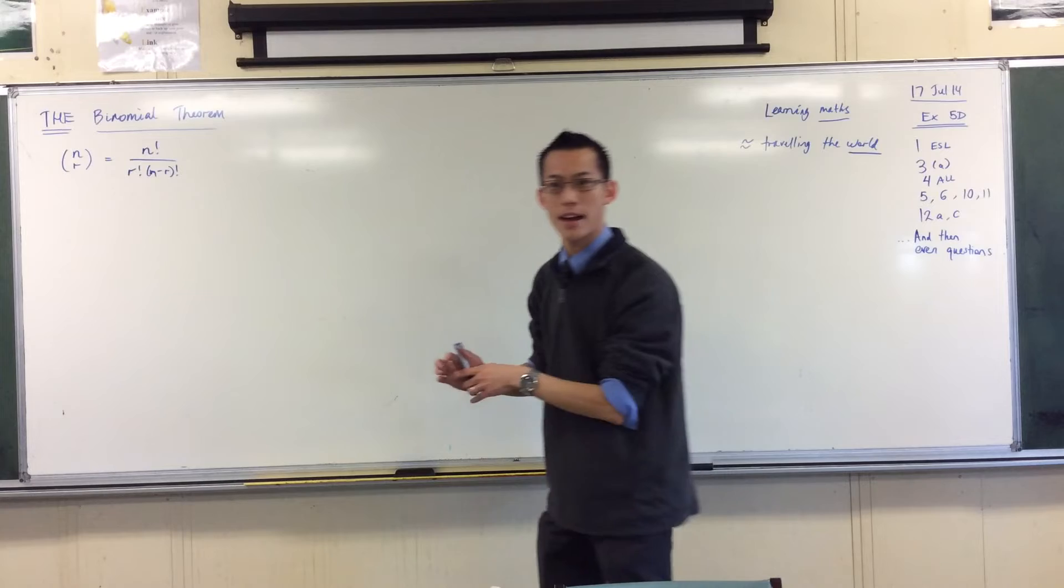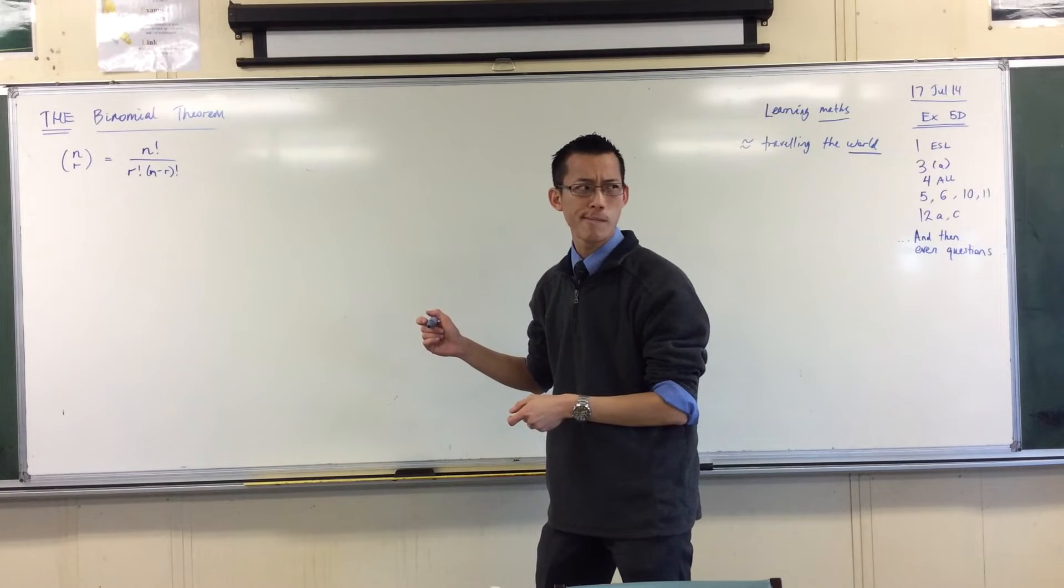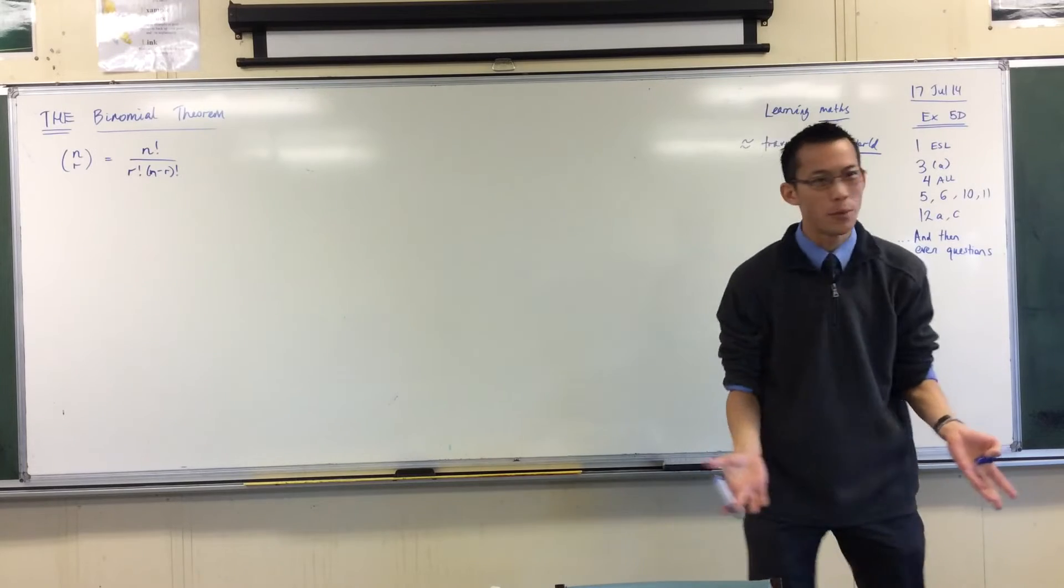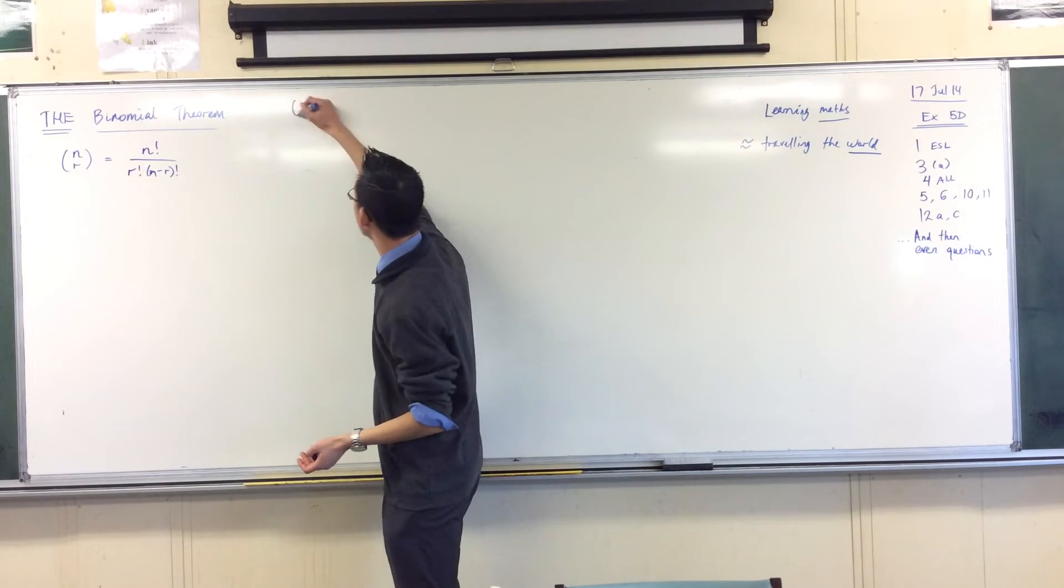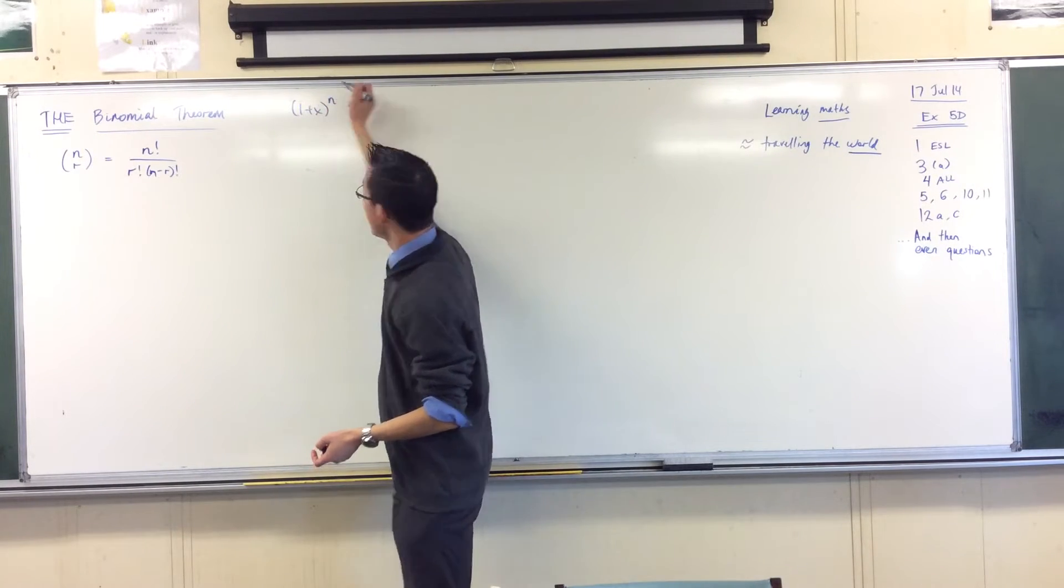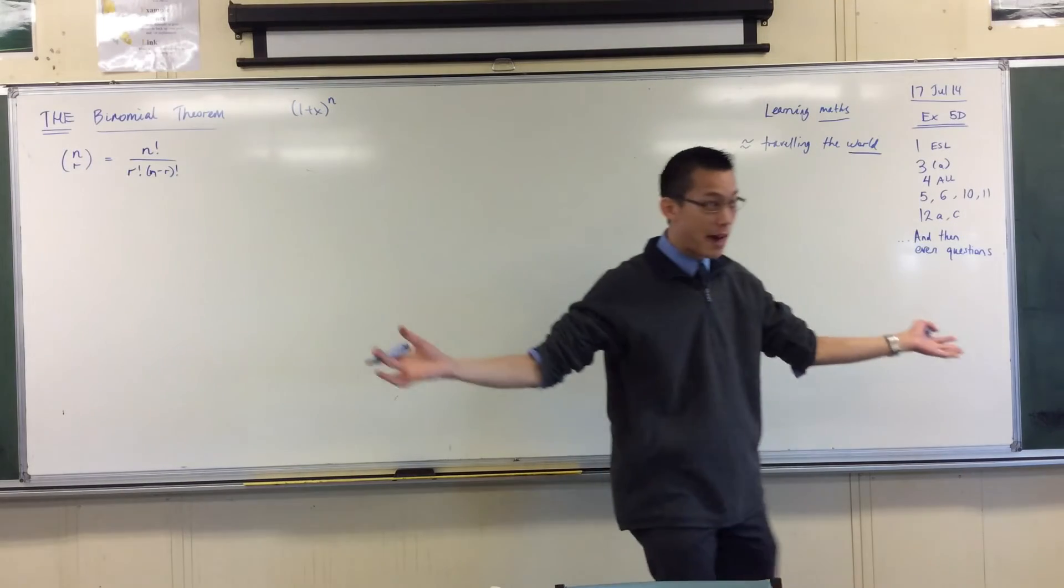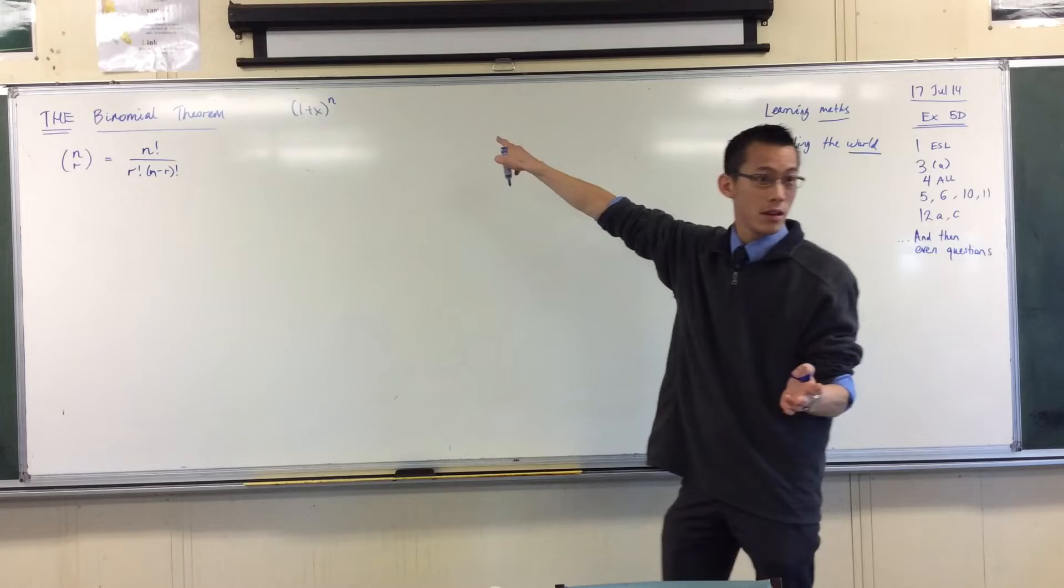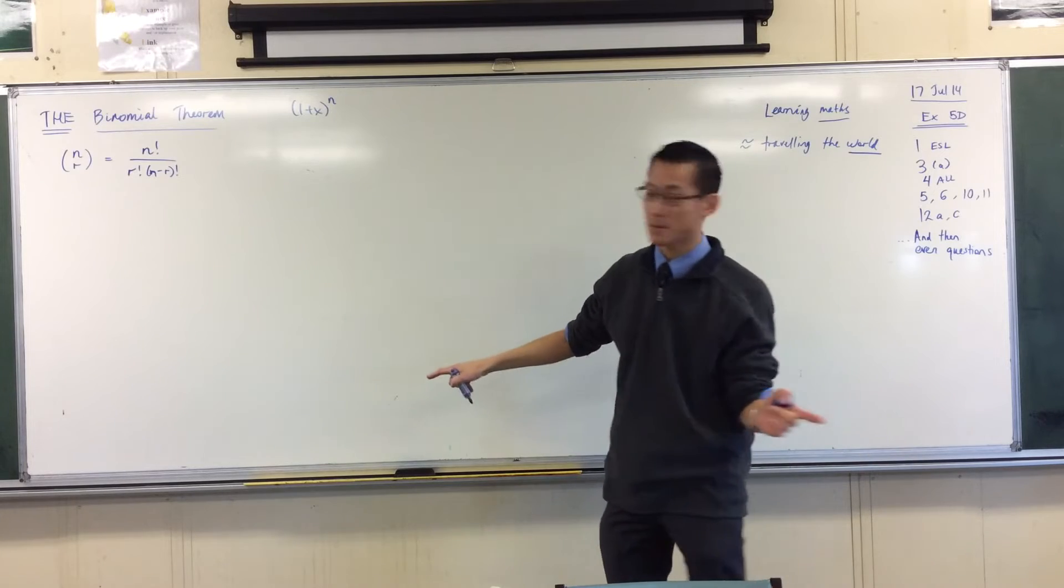I was talking about coefficients, right. Coefficients of what? Yeah, we were looking at a binomial expansion, weren't we. In particular, we were looking at this guy. And we said, well, when you expand him out, you'll have a whole bunch of terms. How many terms? N plus one terms, right.